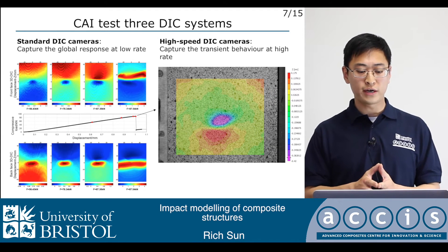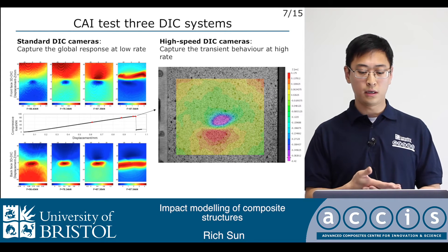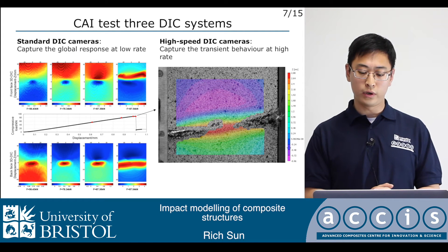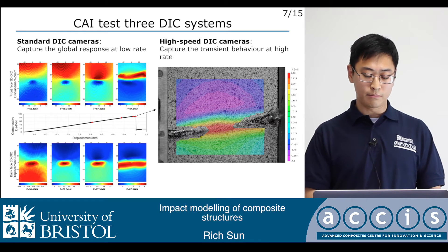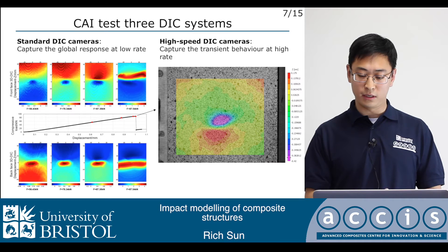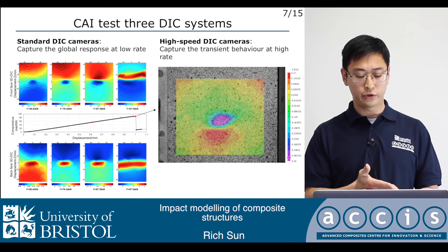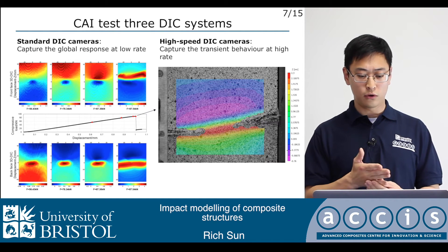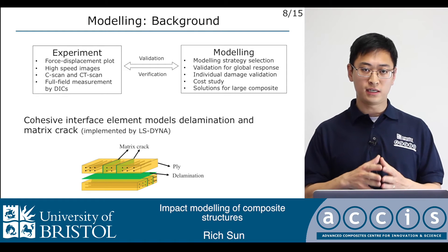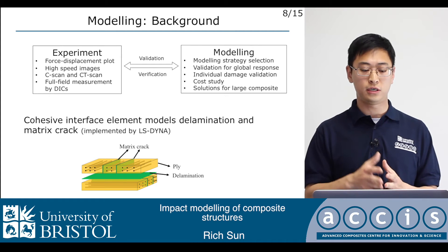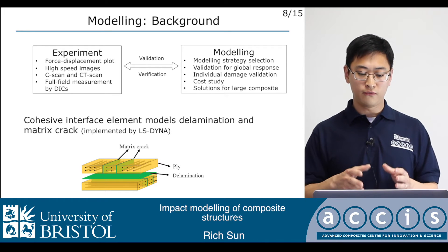This shows test results during compression after impact using three DIC systems — two facing the front and back faces of the specimen, and one high speed camera looking at the region of interest where the material fails. Not only the static linear loading phase is captured, but also the moment of failure, with the high speed camera running at up to 30,000 frames per second. We can see that the surface imperfection introduced during impact strongly influences local instability from the beginning of loading to failure. All this data — full displacement plots, high speed images, CT-scan, and DIC full field displacement — is used to validate and improve our modeling.